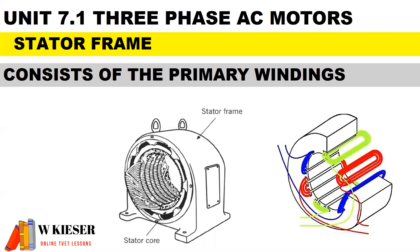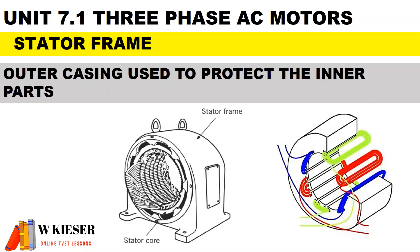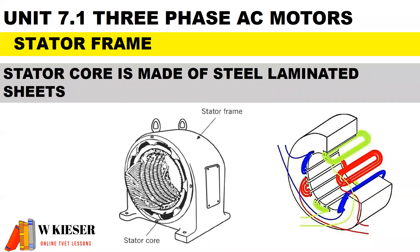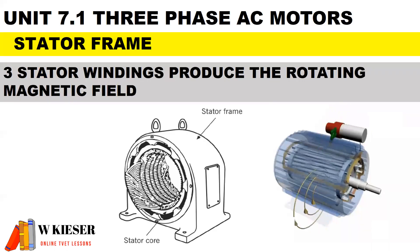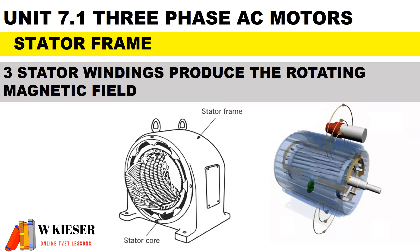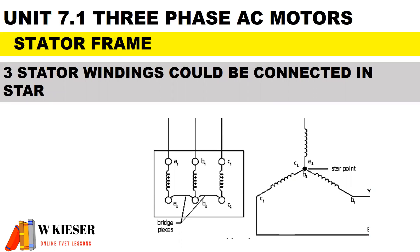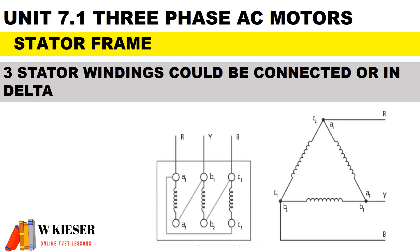For the stator frame, it consists of the primary windings. The outer casing is used to protect the inner parts. The stator core is made of steel laminated sheets, and that is to reduce the effects of eddy currents. The three stator windings produce the rotating magnetic field, which is known as synchronous speed. The three stator windings could be connected in star, where it is bridged horizontally in the terminal box, or it could be connected in delta, where it is bridged vertically inside the terminal box.